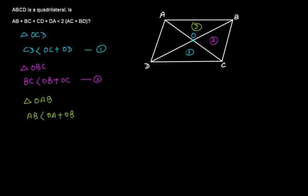Now if we take this fourth triangle, that is triangle O, A, D, triangle O, A, D. In this triangle O, A, D, O, A plus O, D will be greater than A, D, or we can say that A, D is less than O, A plus O, D. Right? So this was the third one, and this was the fourth one.